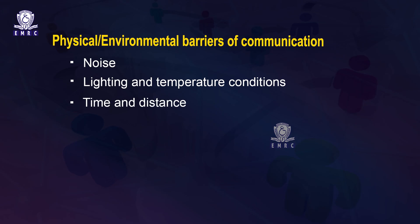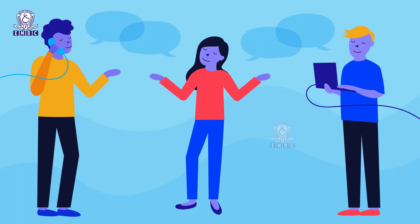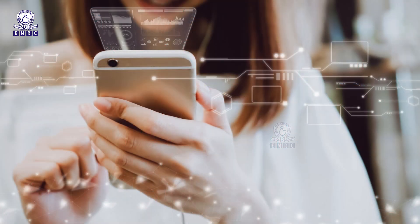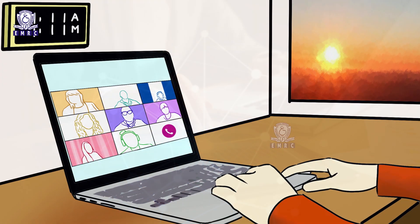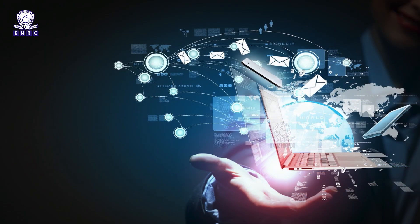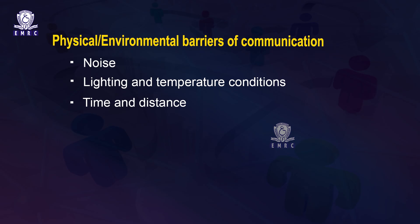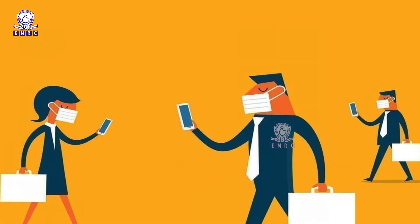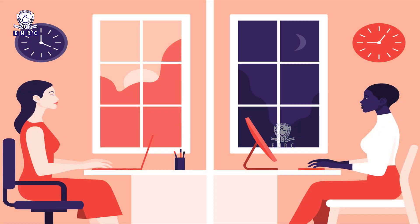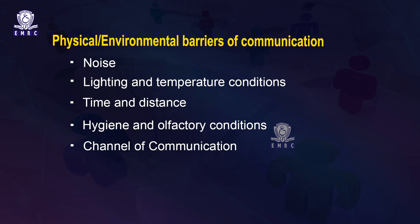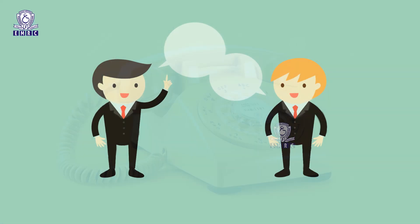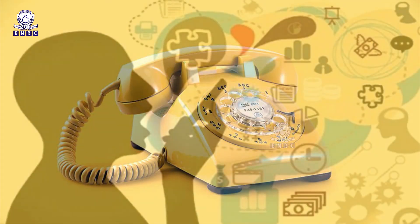Time and distance also play a role in communication. People communicating from different places and in different time zones have difficulties connecting to each other; however, technology has played a vital role in bridging this gap. The timing of sending a message and the time given to respond also become significant. Unhygienic conditions affect the physical and mental state of the person, which in turn has an impact on the initiation and perception of communication. The channel of communication also affects quality — face-to-face communication is the best form, while telephonic and electronic media carry higher chances of misperception and distortion.